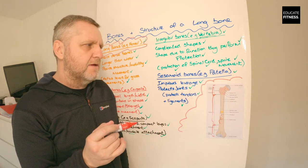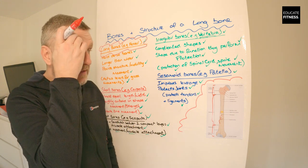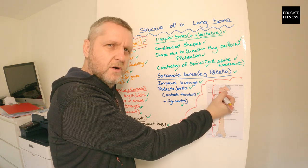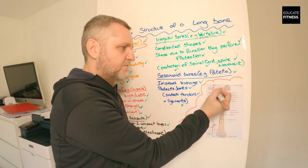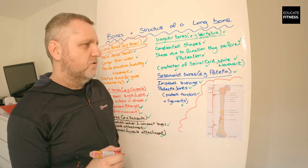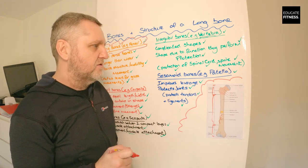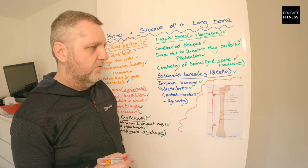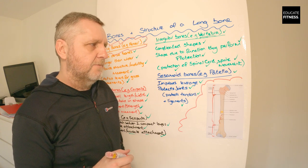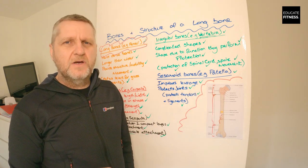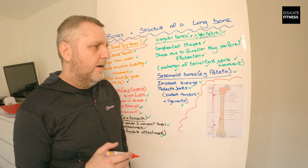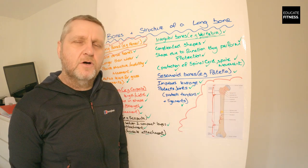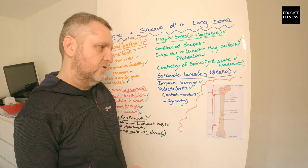An important point to remember: when training children of any age, the epiphyseal plate can be quite a weak part of the bone. We have to be very careful not to use too much weight-bearing exercise with children, as it can be prone to breaking, damage, and can be very painful. When we mature and there's no more growth, the epiphyseal plate hardens and becomes the epiphyseal line.